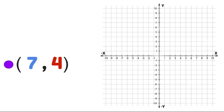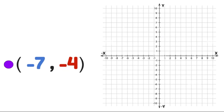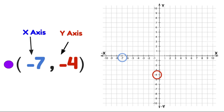Let's have a look at plotting some coordinate integers onto our Cartesian plane. The first number is our x-axis and the second number is our y-axis. So we find 7 on the x-axis and 4 on the y-axis — the point where these two numbers meet is where we put our dot. Now let's use another set of ordered pairs with negative numbers: minus 7 on the x-axis and minus 4 on the y-axis. The point where these two numbers meet is where we put our dot.